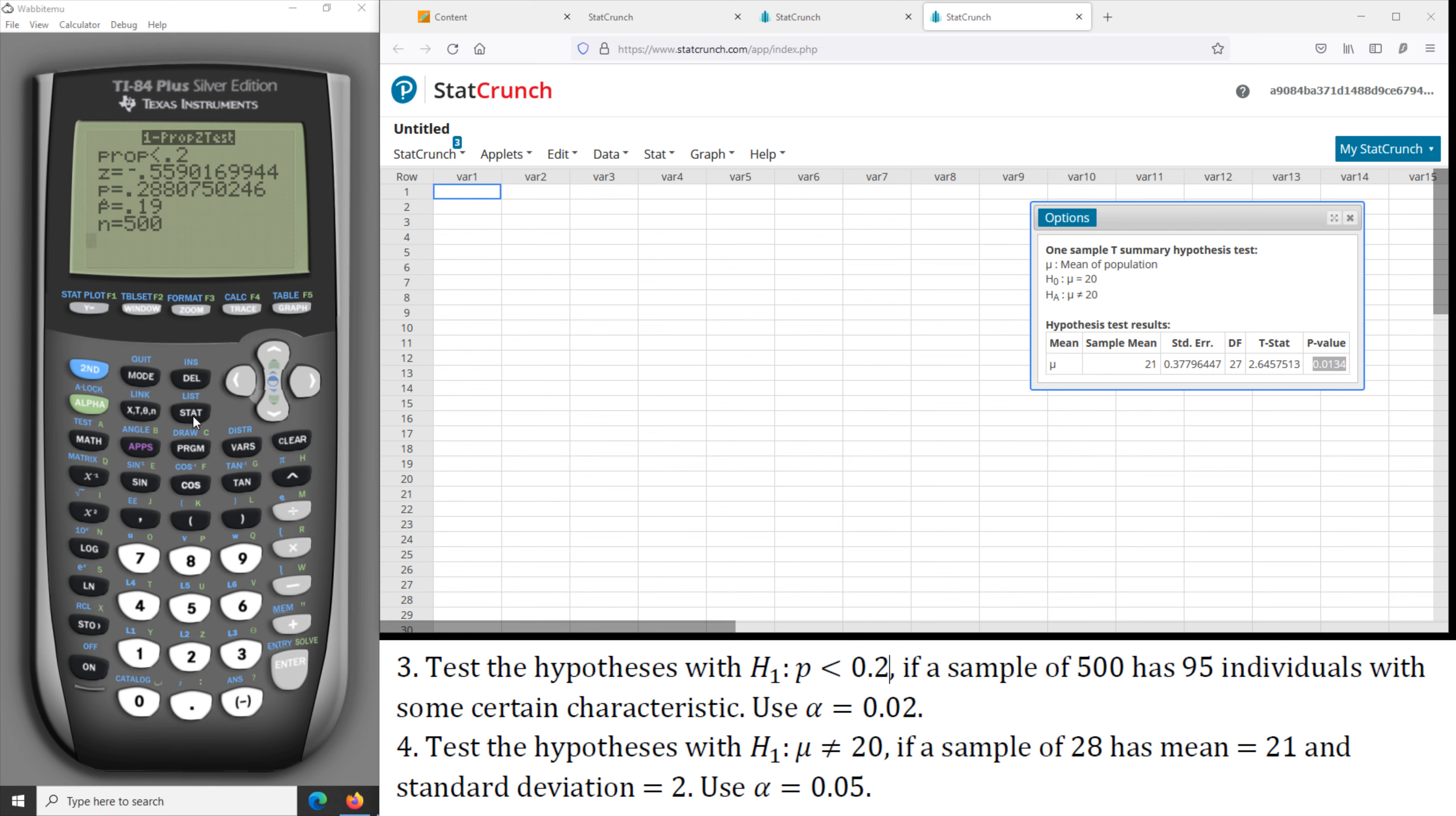All right. On TI-84 calculator, go to Stat, go to Test. And we will test for the population mean, we're going to use the t-test. And this is the mean not equal to 20, and we choose 20.